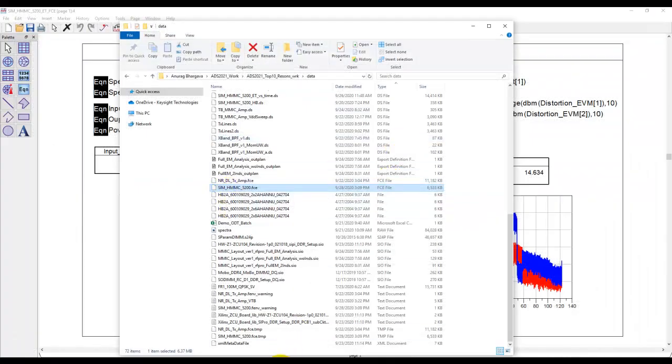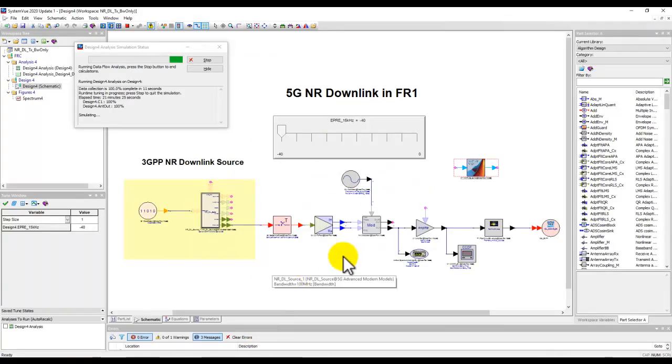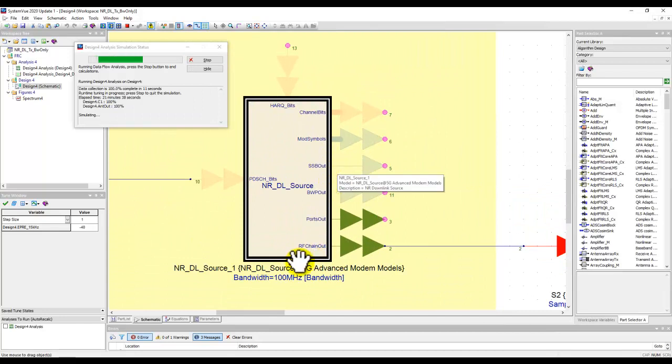Now, once I have the model, I can switch to SystemVue design platform. And you can watch my other videos on SystemVue and how to use SystemVue. It's a very flexible system-level design environment. And in here, I do have a 5G source configured for 100 MHz bandwidth from our 5G library.